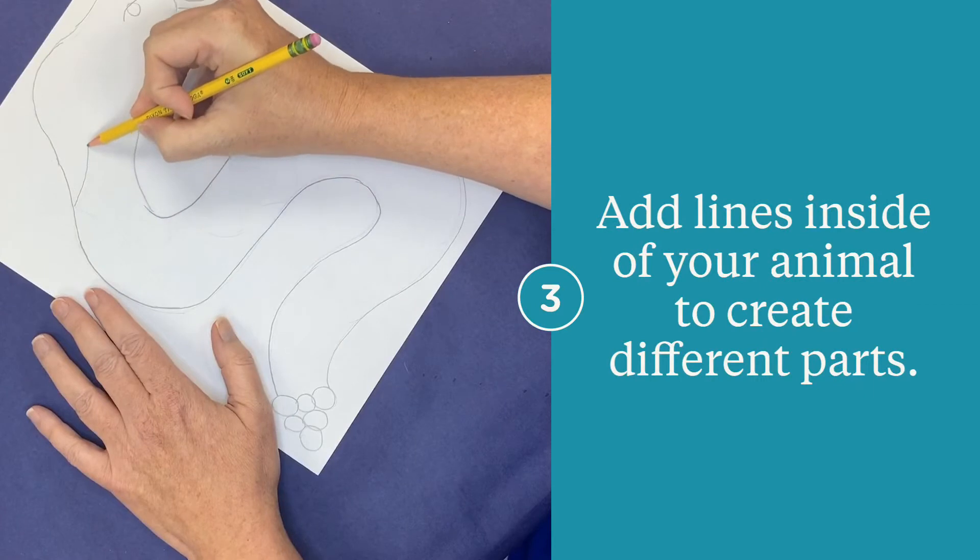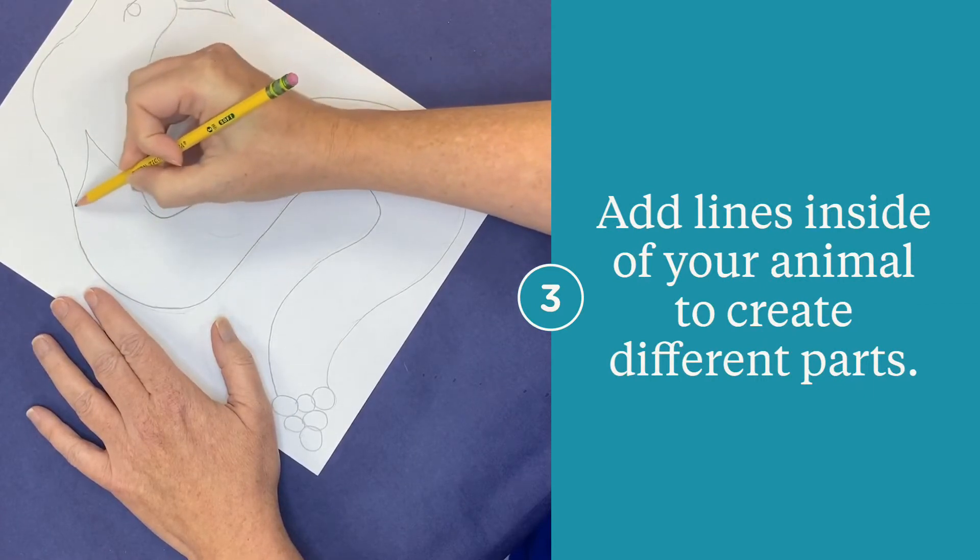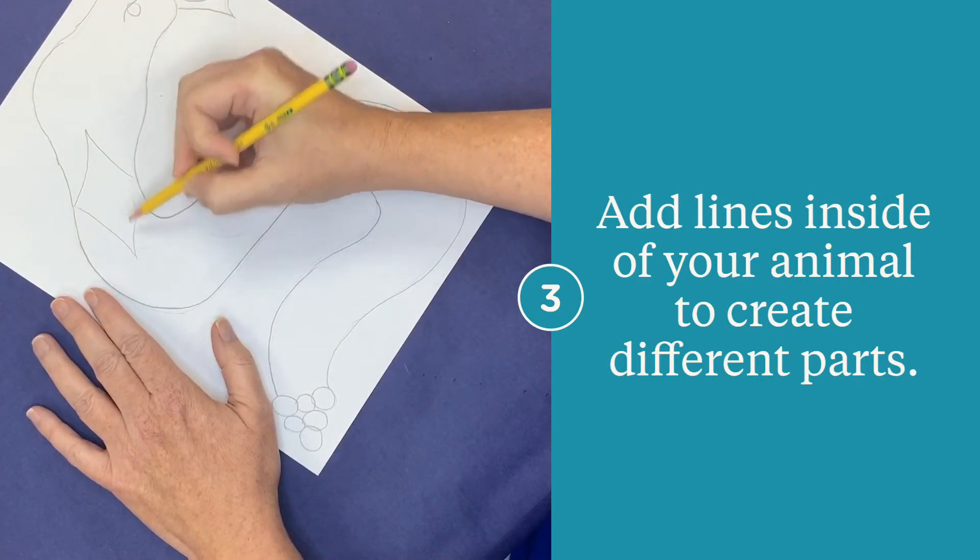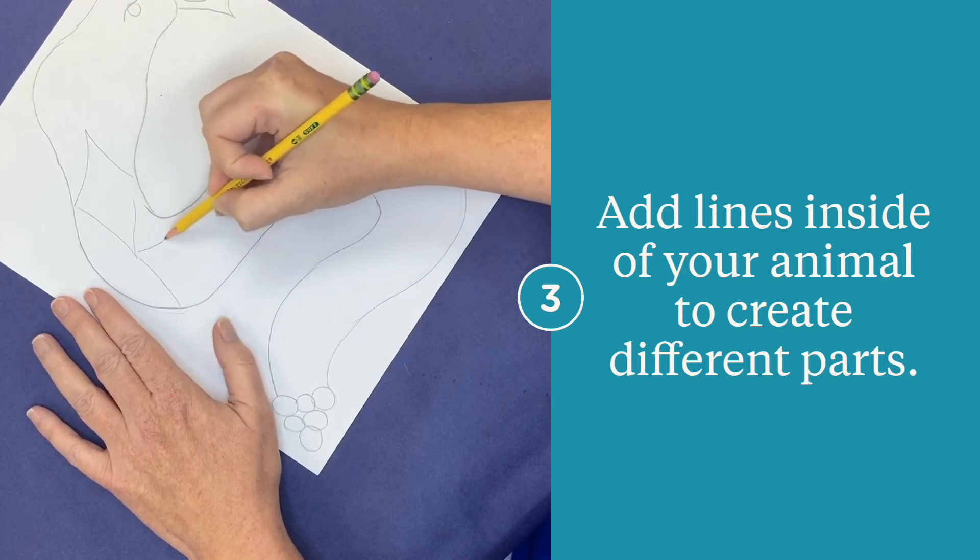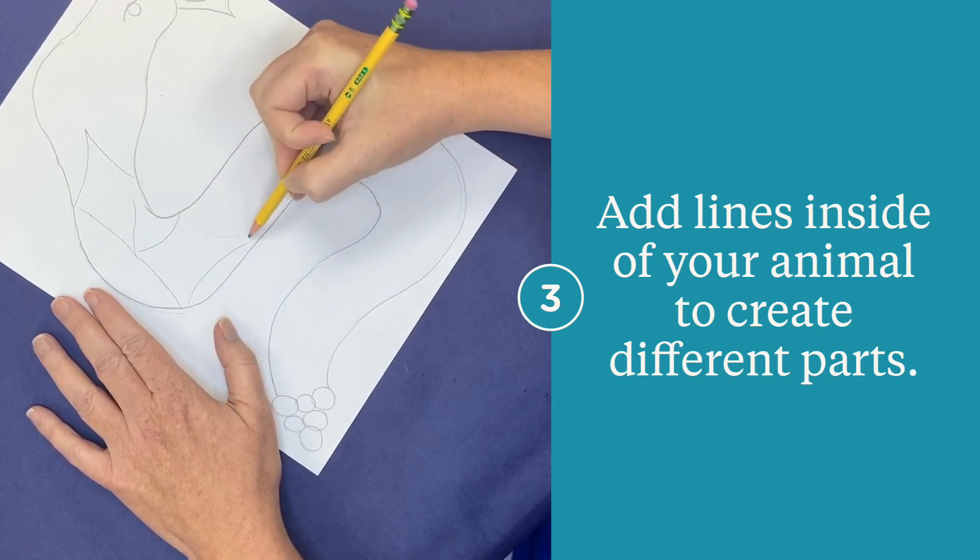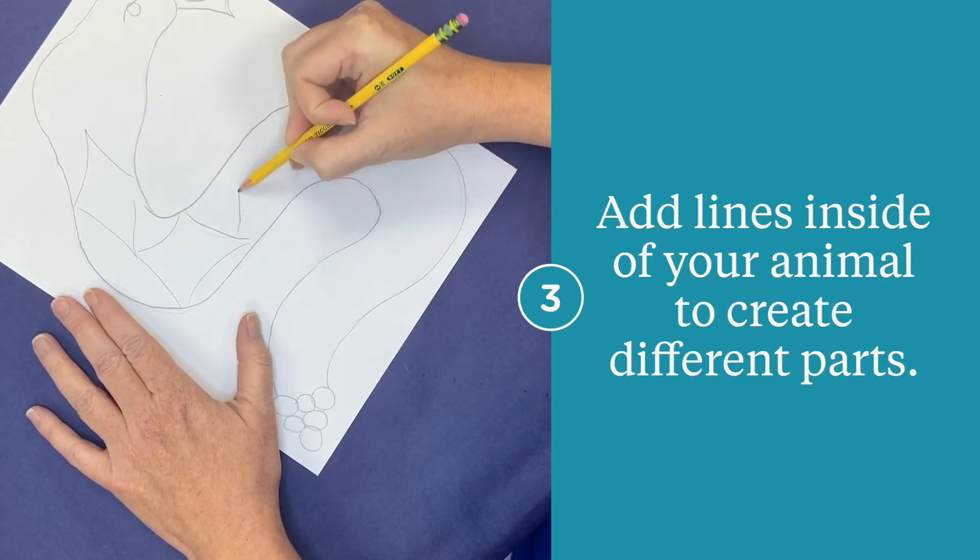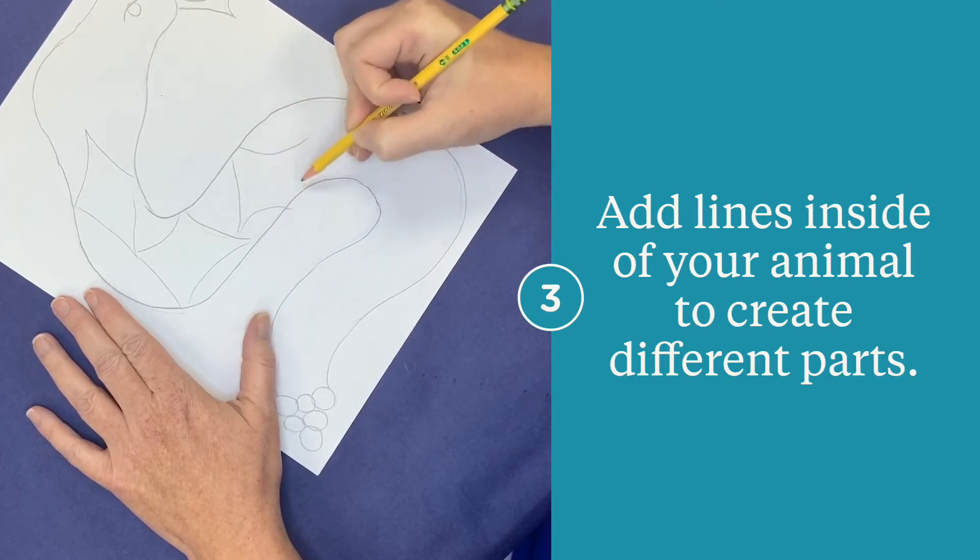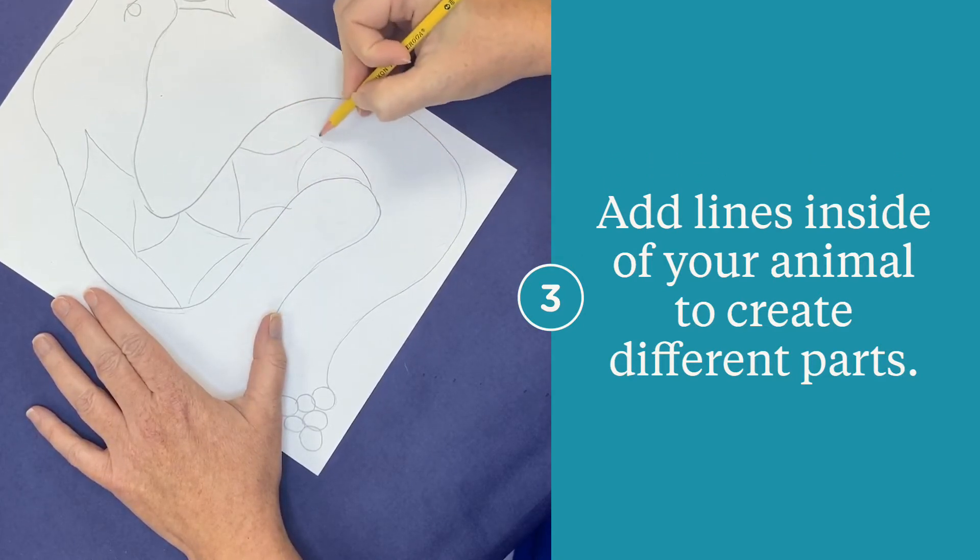The next step for this drawing is to add lines inside of your object. This is going to give you different areas in which you will do different zentangles. You can make it a part of the pattern of your object or just divide your object up.